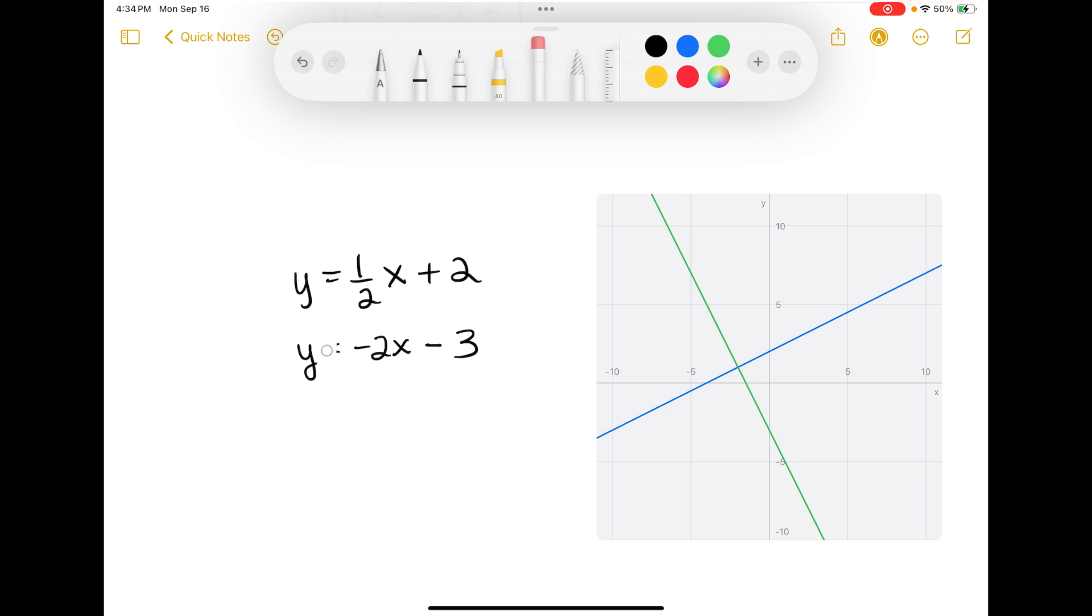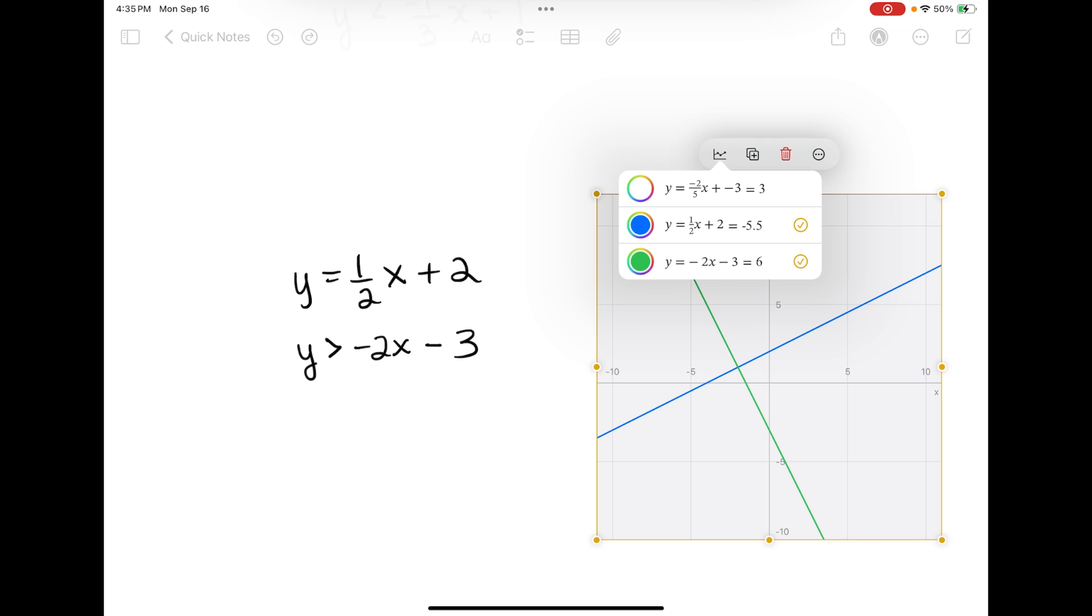So I wonder if I change this now to greater than. Does it shade? No. It doesn't shade but you can tap the graph and then that first icon that looks like a graph, if you tap it you can change the color of your lines but you can't make them dotted or dashed or anything like that. You can turn them on or off and it also recognizes other equations that I have in my note as well.